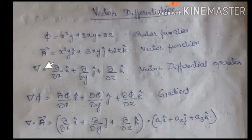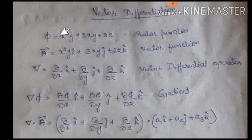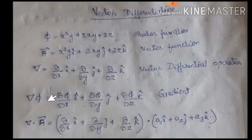We come across three types of operations: gradient, divergence, and curl. Gradient is the multiplication of the vector differential operator with a scalar function. Divergence and curl involve the vector differential operator with a vector function. When del is multiplied with scalar function phi — del into phi — we get the gradient.